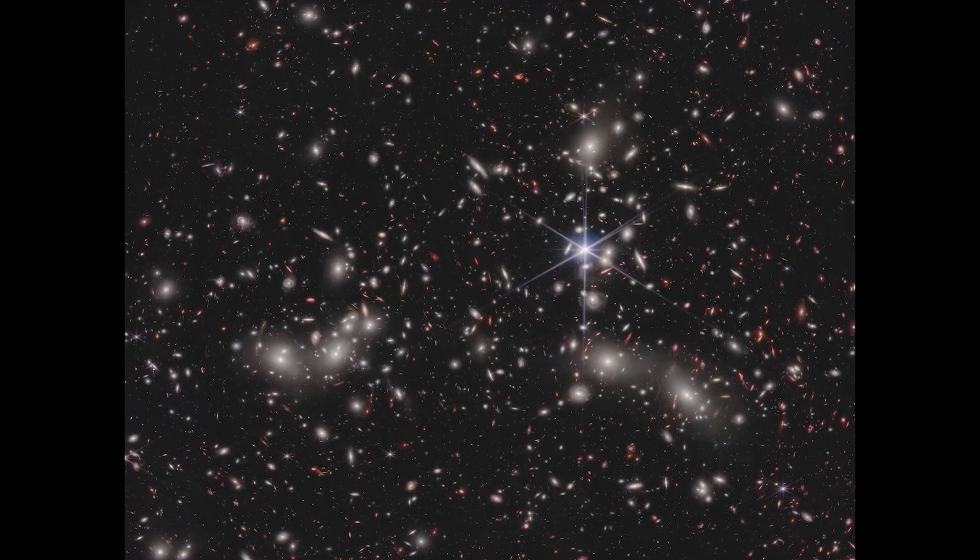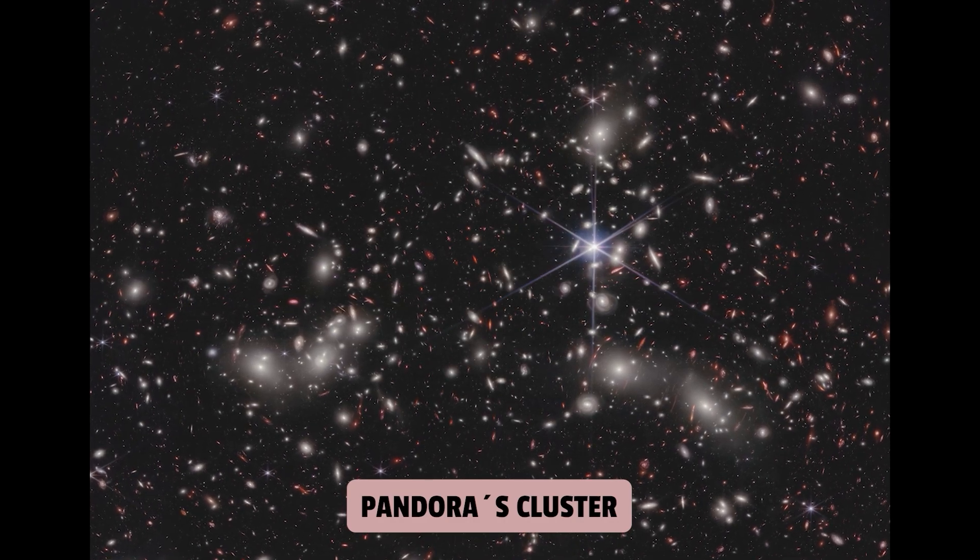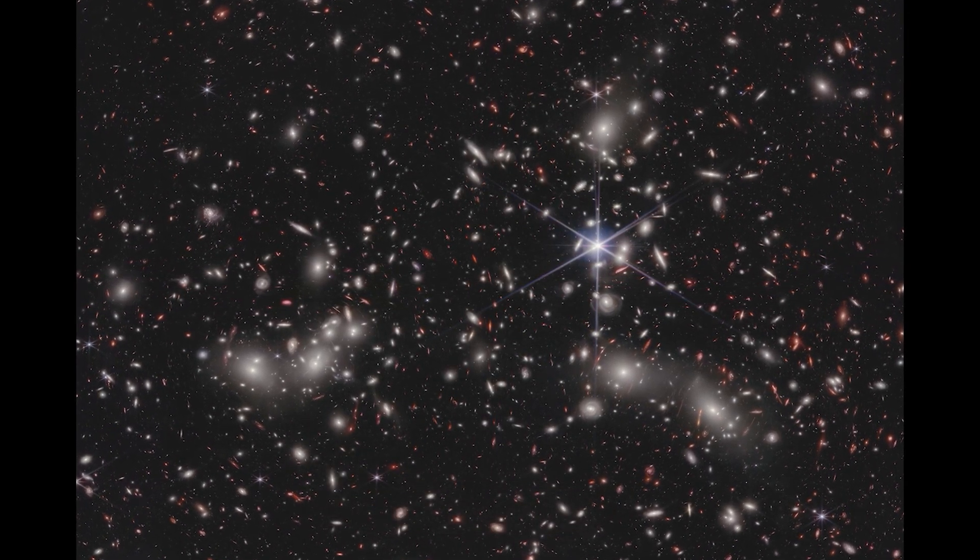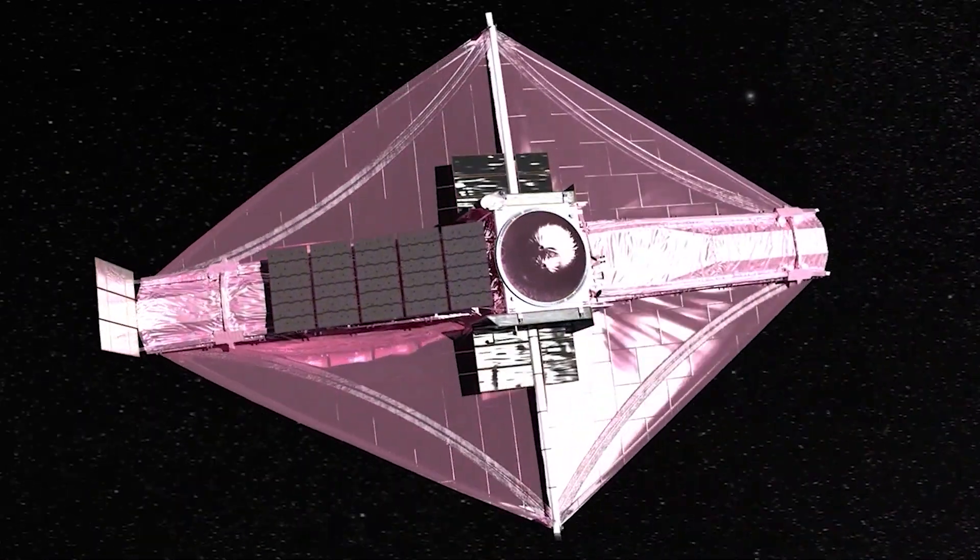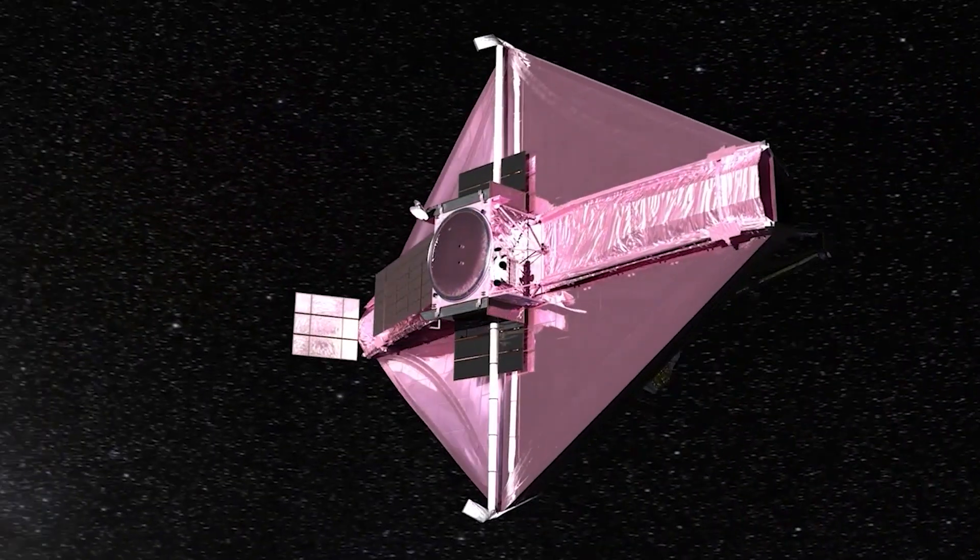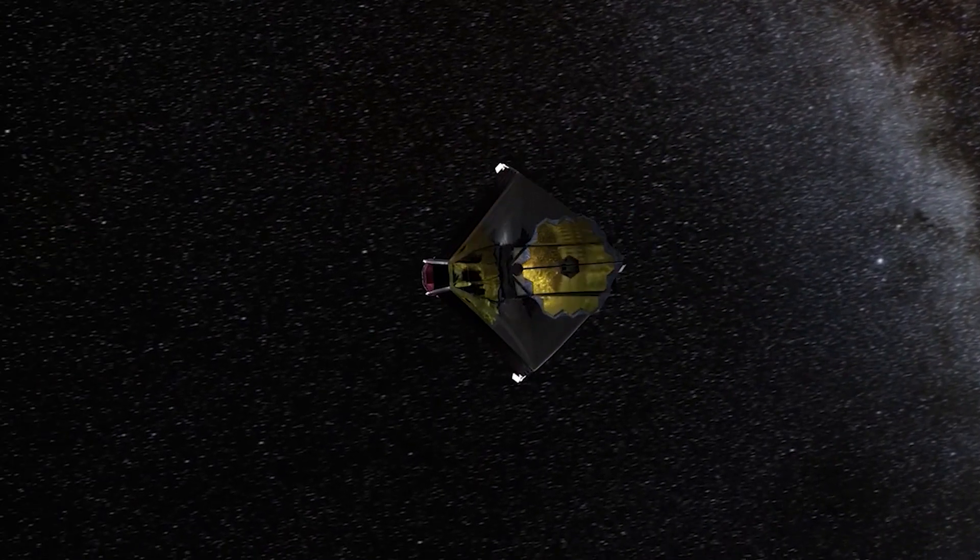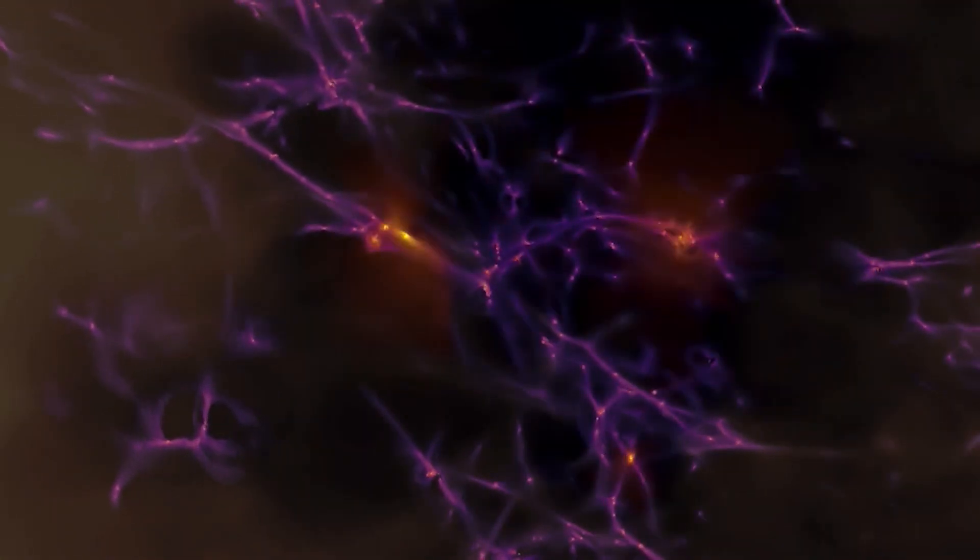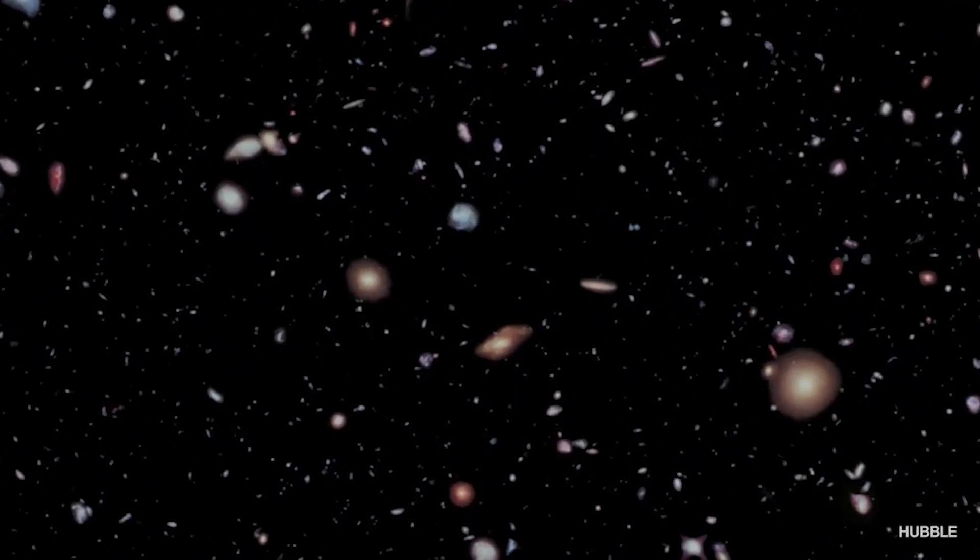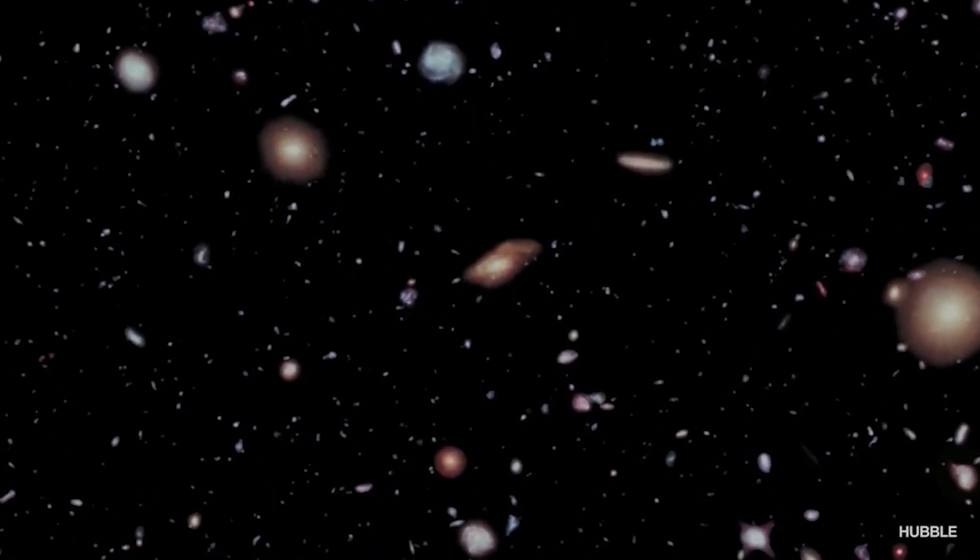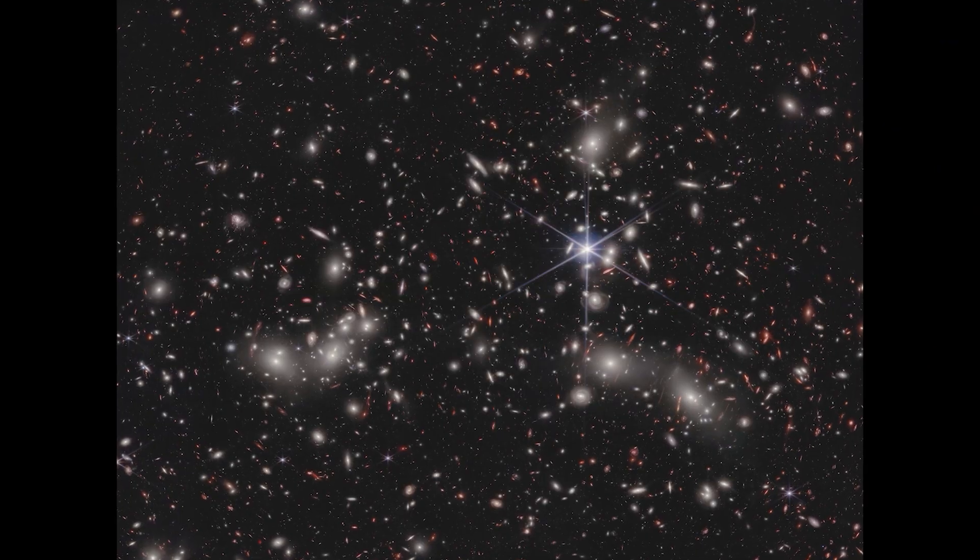In addition, the telescope revealed details of the Pandora cluster, a region 3.5 billion light years away. It detected distant galaxies and gravitational lensing phenomena, showing their presence in images. It also explored the composition of the gas and dust in the cluster, providing information on temperature, density, and composition. It examined the diversity of galaxies in the cluster, showing features such as star formation and supernova explosions. These details help to better understand the evolution and interaction of the galaxies in the Pandora cluster.